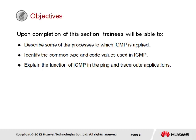Upon completion of this section, it is generally expected that trainees will be able to describe some of the processes to which ICMP is applied, identify the common type and code values used in ICMP, and explain the function of ICMP in the ping and traceroute applications.